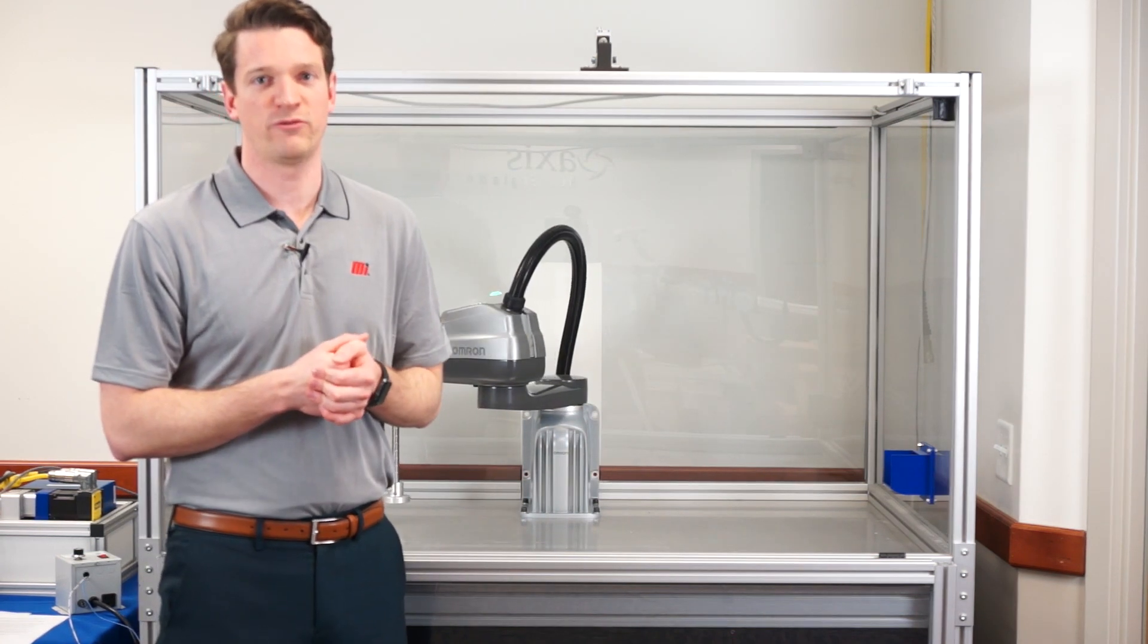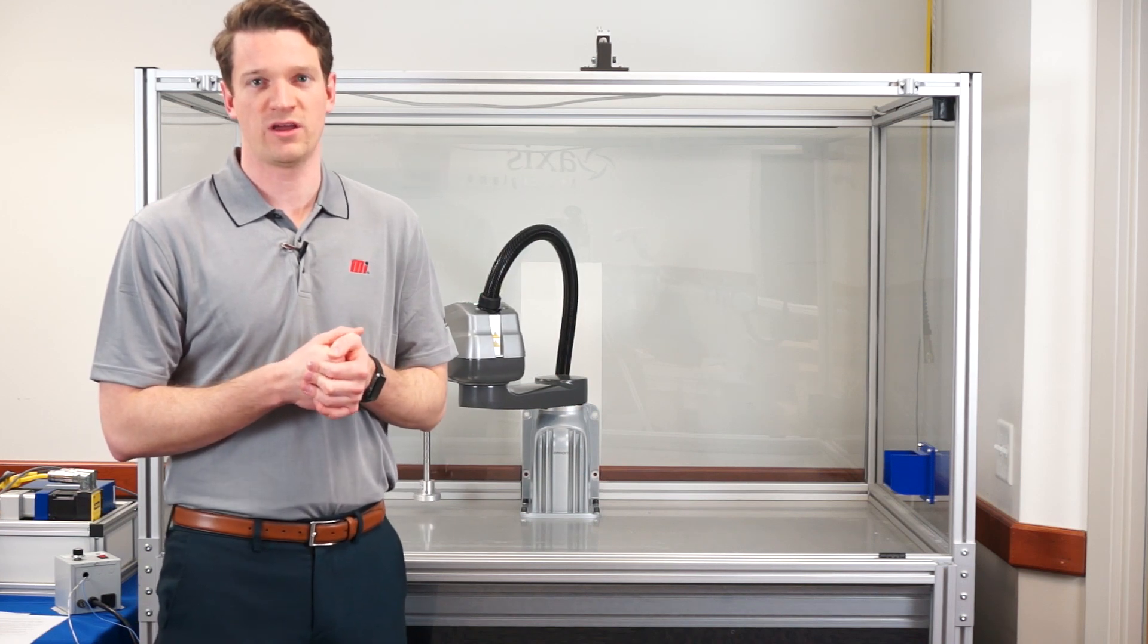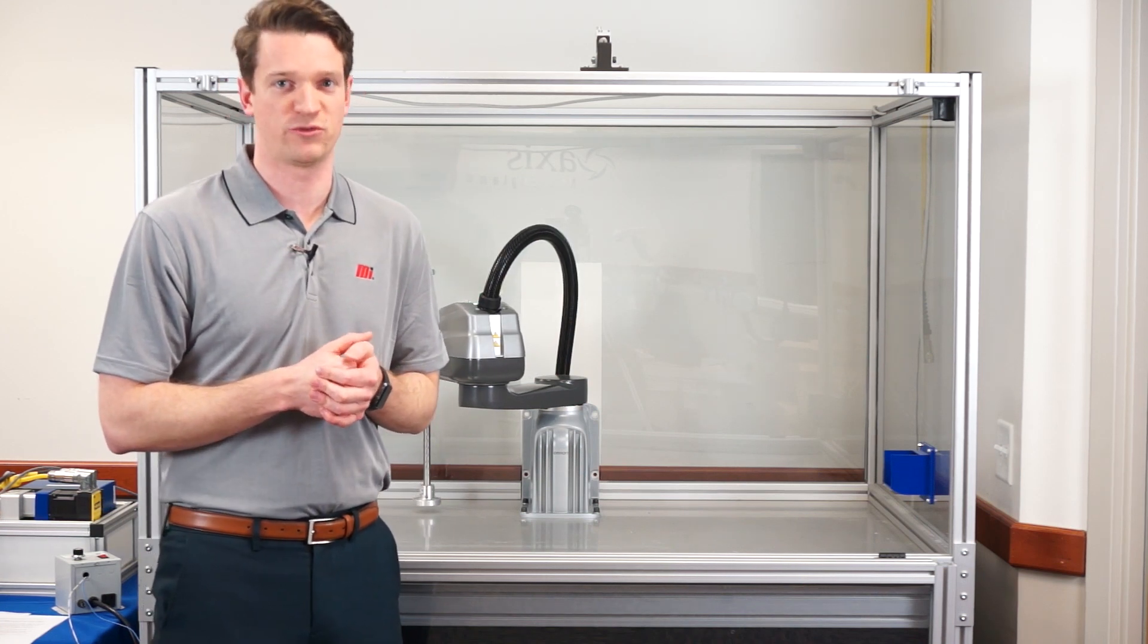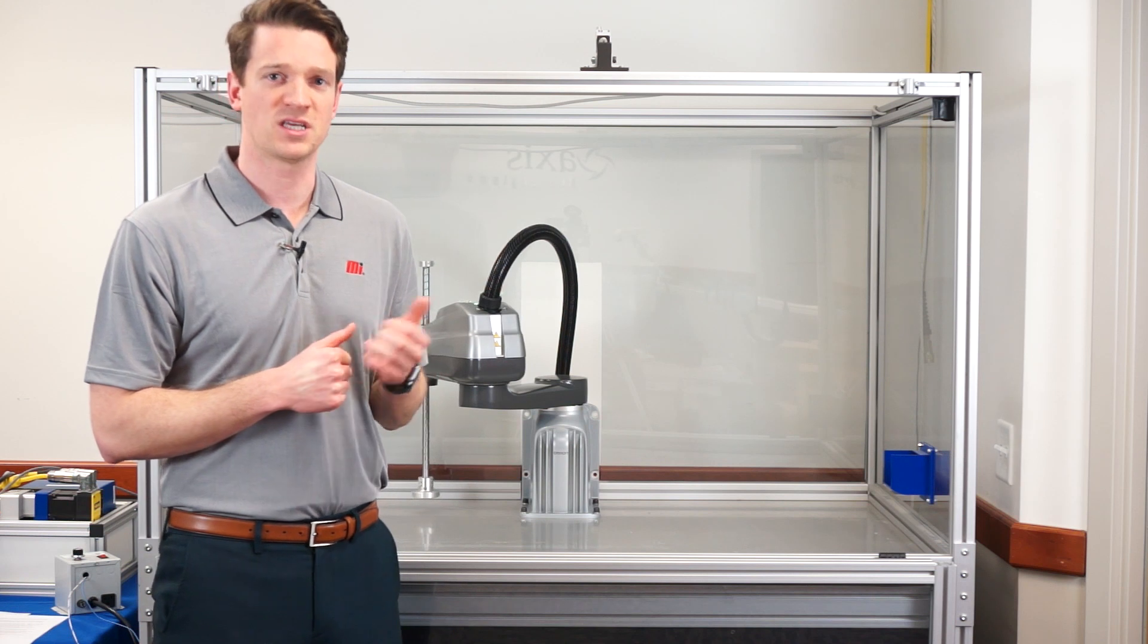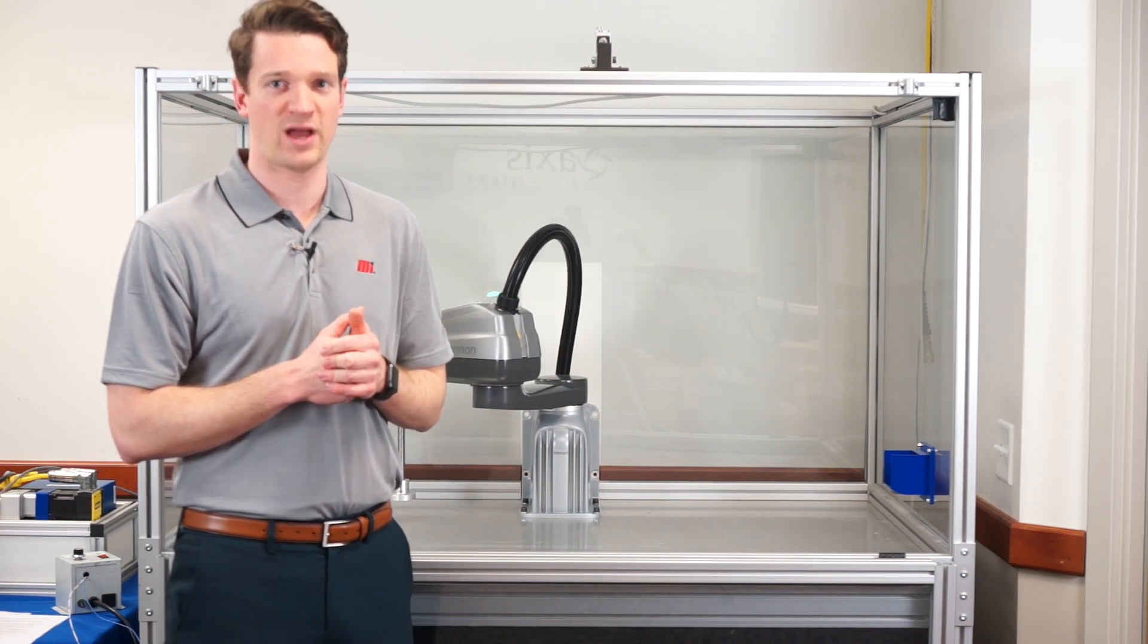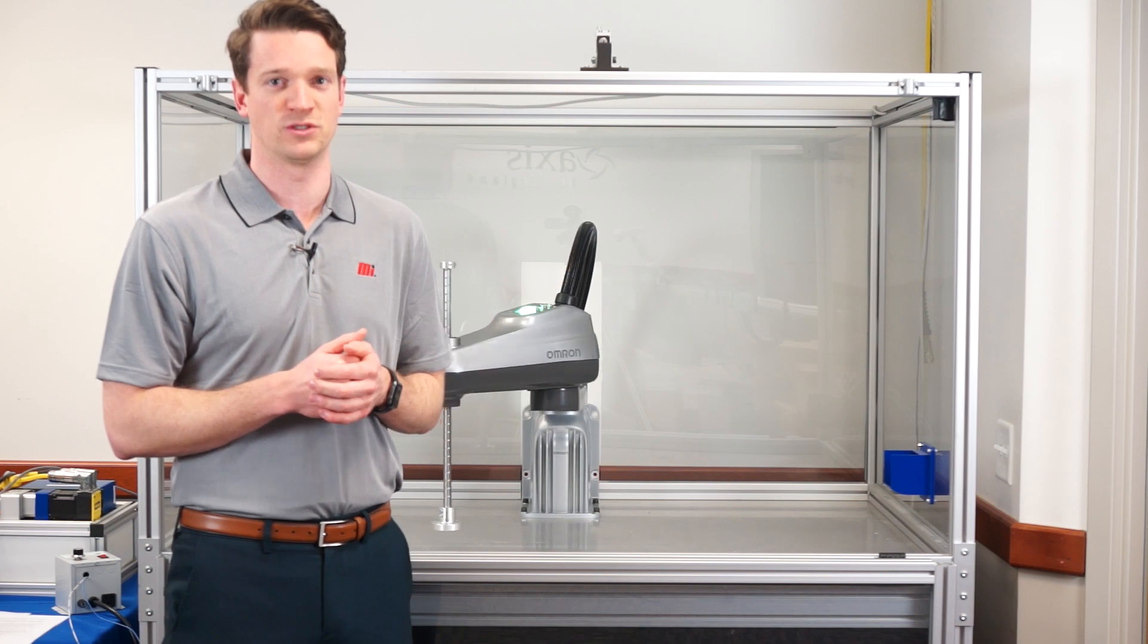We've worked with Omron for many years to provide Delta, SCARA, and articulated robot solutions to our most demanding robotics customers, but this i4L product meets the needs of the fast-growing entry-level robot market with a robust, affordable solution.